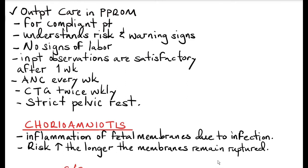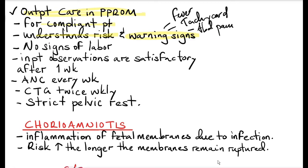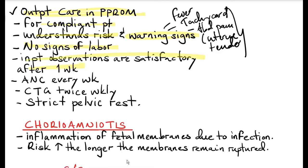There is a window for managing PPROM patients as outpatients, for those who are compliant and understand the risks and warning signs — such as fever, tachycardia, and abdominal pain indicative of uterine tenderness, which are signs of chorioamnionitis. If the patient shows no signs of labor and is stable after one week of admission, you can allow them home. They must attend antenatal care weekly, have a cardiotocograph done twice weekly, and maintain strict pelvic rest with no coitus.